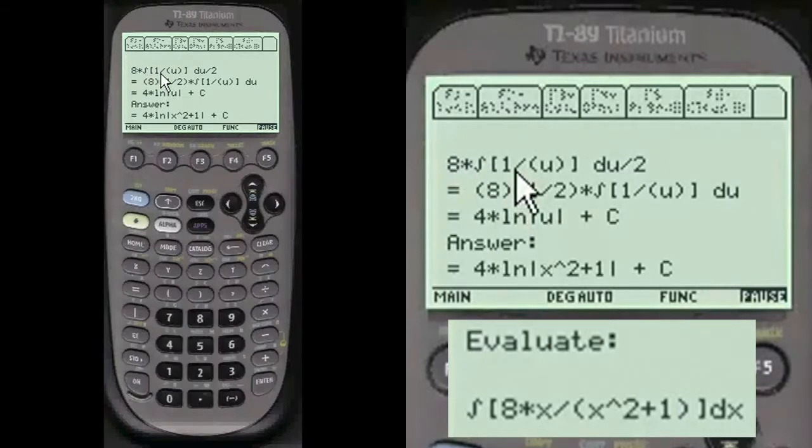So we have 8 outside the integral and 1 over u, du over 2. Now we have a constant here of 1 half. So we have to bring that outside the integral, which we do over here. 8 and 1 half, that equals 4.